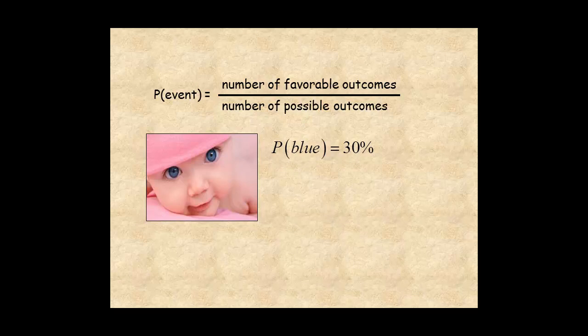The complement of having blue eyes is not having blue eyes. So the probability of the complement is 100 minus 30, which equals 70%. So the probability of a student not having blue eyes is 70%, or 7 tenths.